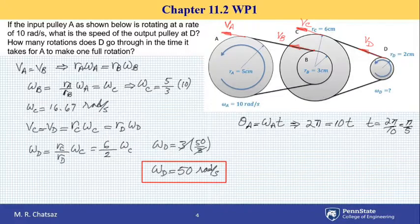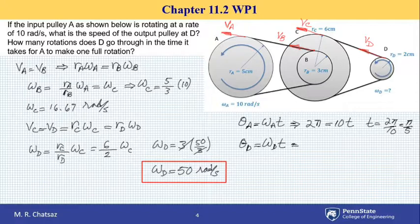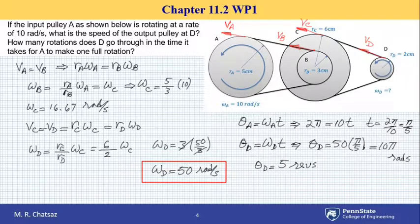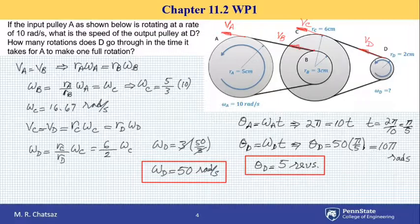During that same amount of time, disk D has an angular displacement theta_D equal to omega_D times T. We found omega_D to be 50 radians per second, times T of pi over 5, giving us 10 pi radians. Dividing by 2 pi, that is 5 revolutions. So for every revolution of A, disk D rotates 5 times.